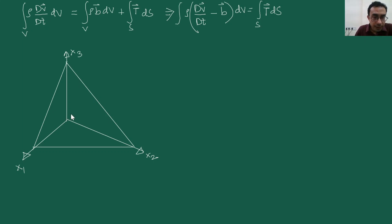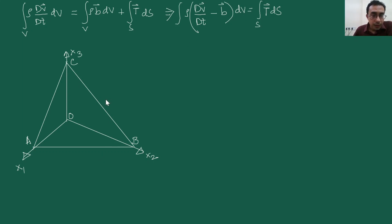Let's name the vertices like this. This is O, this is A, this is B, this is C. Our plan is like this: we will consider each of these triangles — triangle ABC, triangle OCB, triangle OAC and triangle OAB — individually. And we are going to consider the unit outward normal to each, separately, as well as one generic traction vector lying on that plane. So first of all, for our triangle ABC.